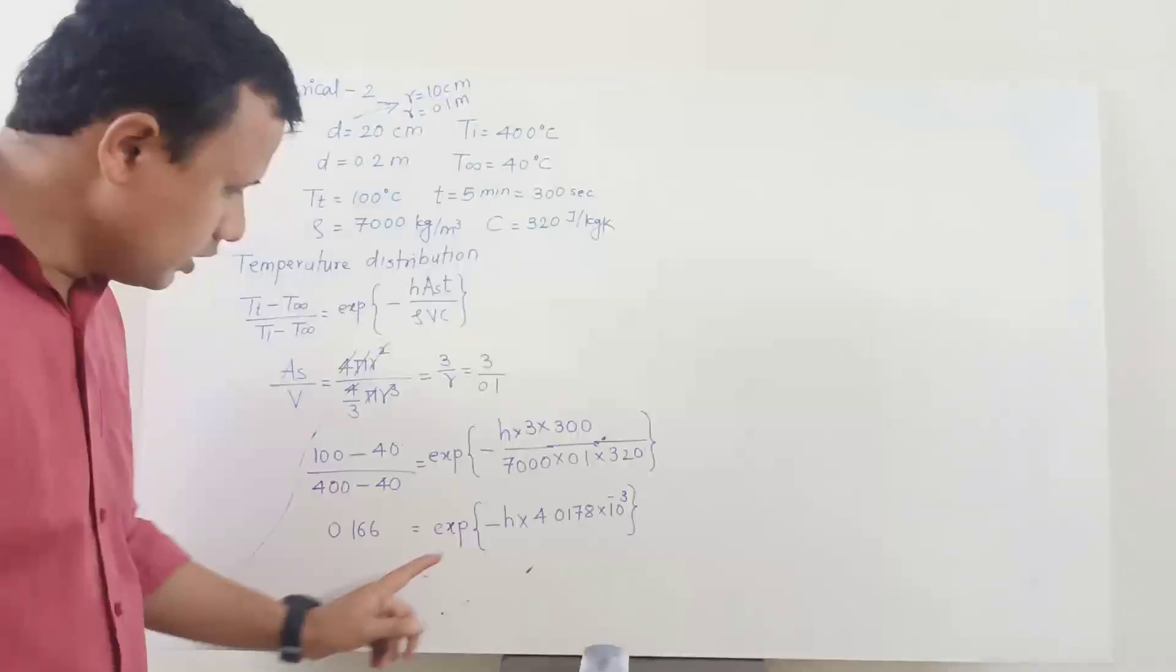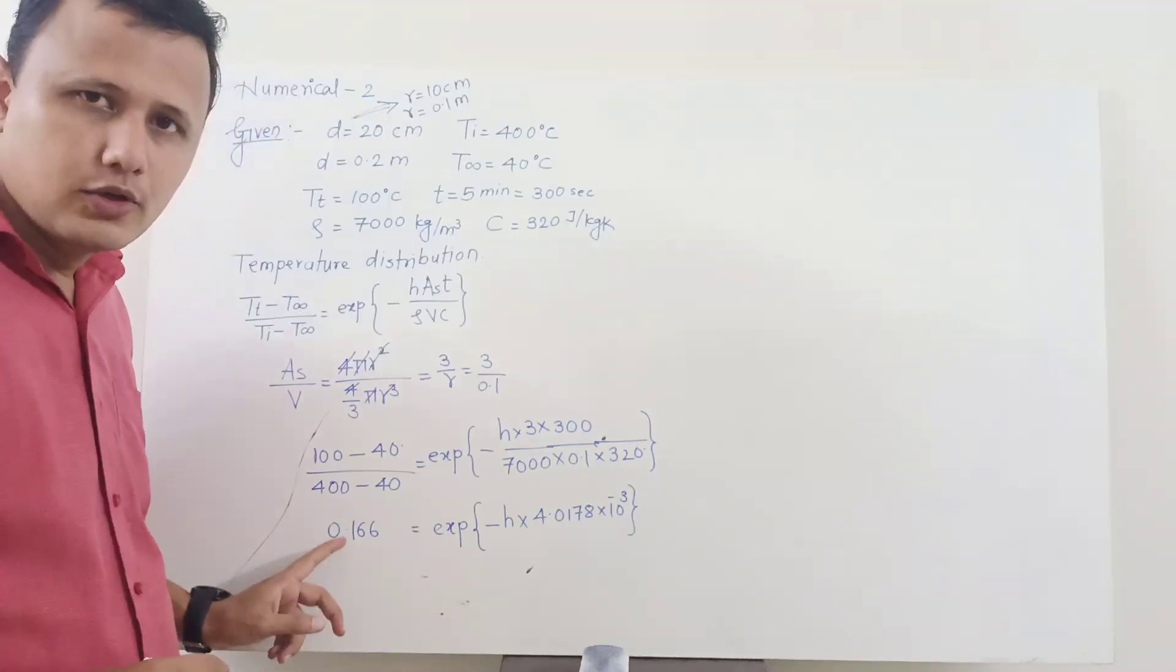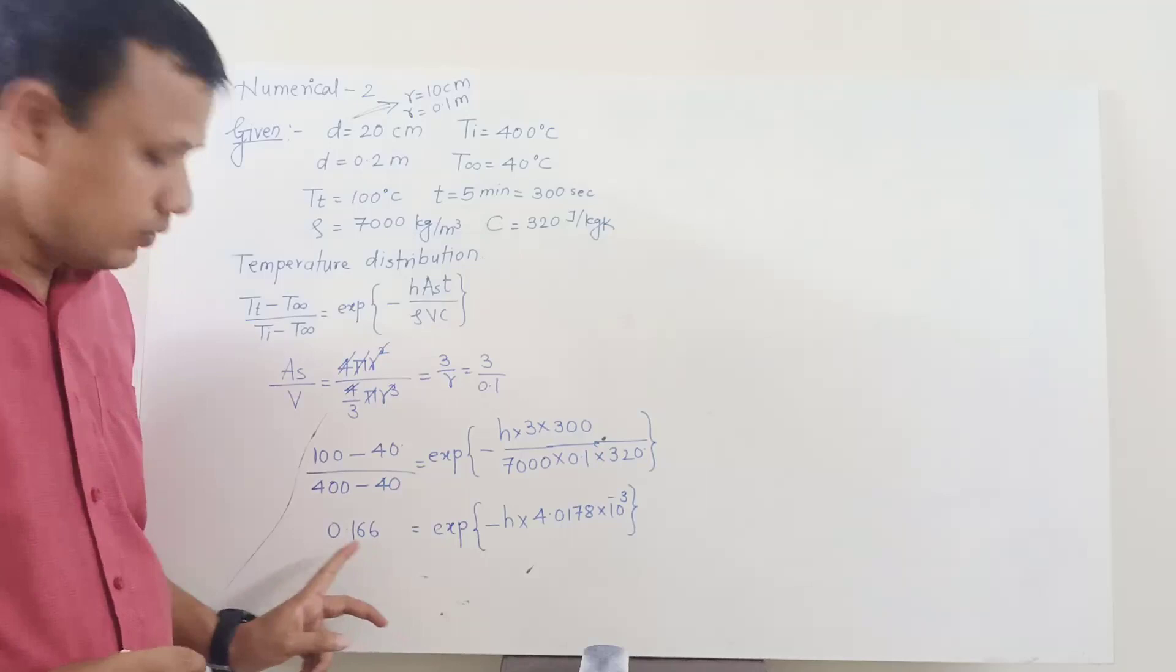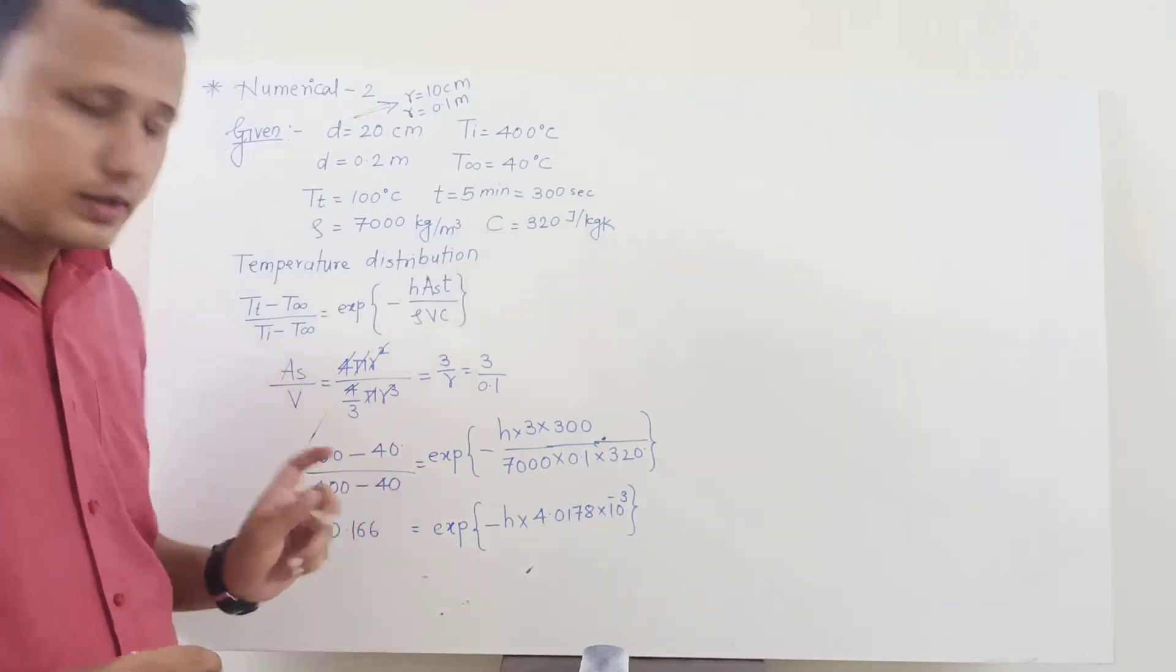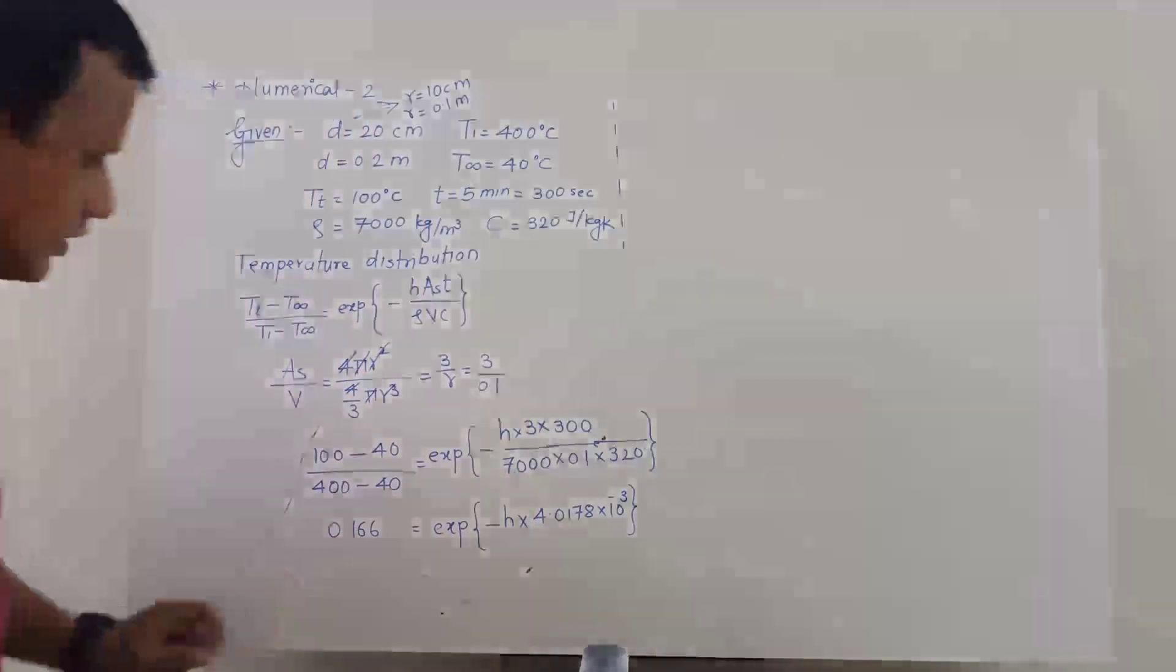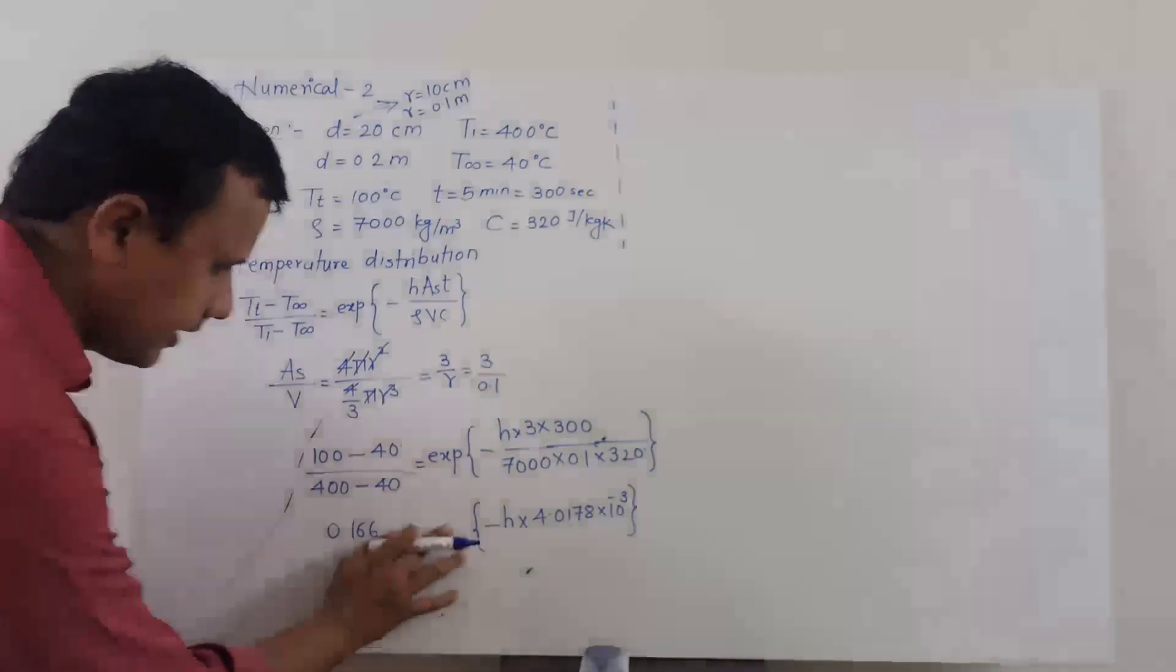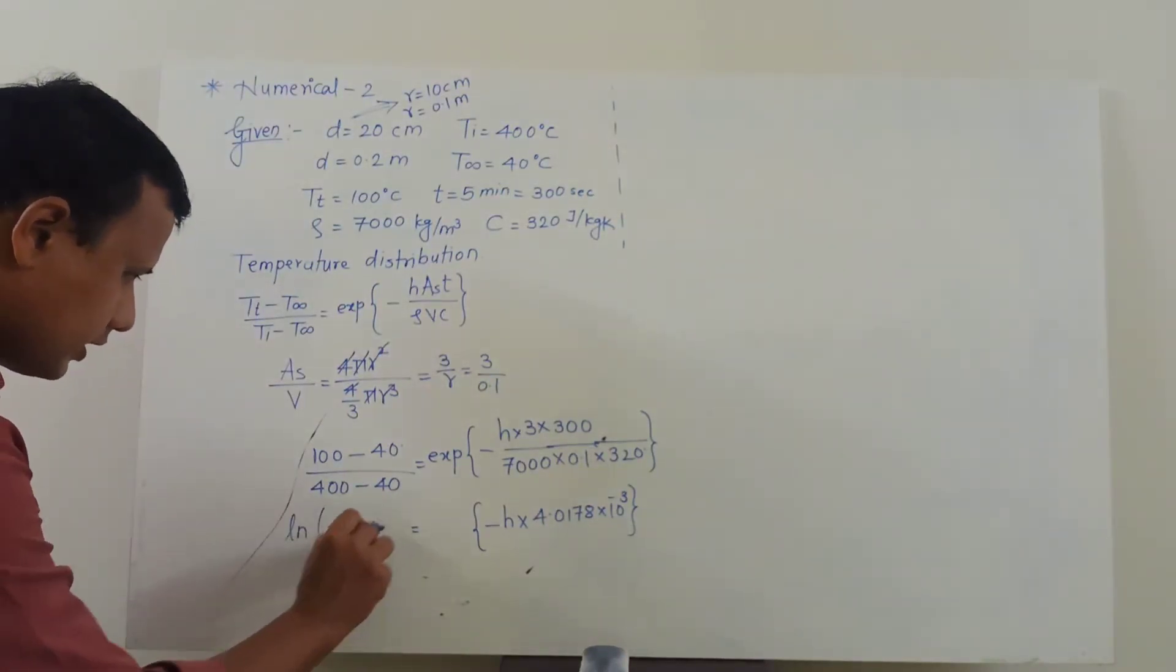Now what we need to do, this exponential at this side we will take it on the other side. So what you get, you get a natural log of this 0.166, so that log is nothing but ln of this quantity.